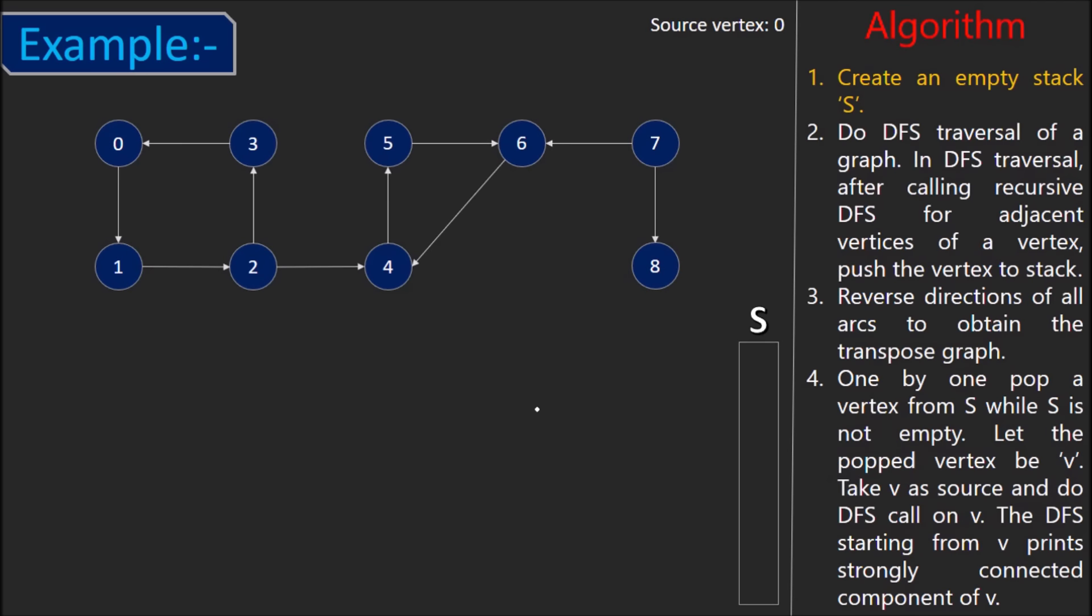Consider the given directed graph with 9 vertices labeled 0 to 8. We'll consider 0 to be our source vertex for DFS. Step 1 says create an empty stack S. Simple enough. Step 2 says do recursive DFS. Let's start with that and keep a track of the start times and finish times of each vertex. 0 starts at time 1. Since 0 has still unvisited vertices, it doesn't finish yet. Vertex 1 is visited at time t equals 2. Again, 2 was unvisited. So, its start time is t equals 3.